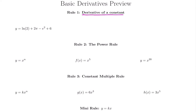The derivative of a constant means the derivative of any number that doesn't have an x on it. So ln of 2 is just a weird-looking number — you can plug it into your calculator and get a value. We'll call the derivative y prime, and the derivative of every number is 0. So the derivative of ln of 2 is 0.